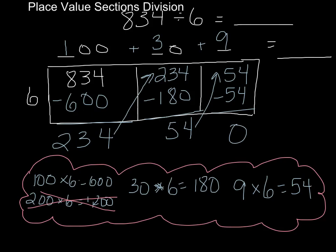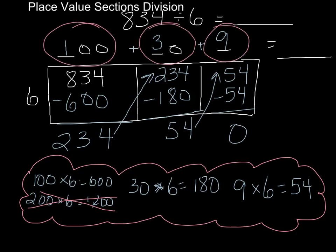So what I have up here would be called partial dividends. 100 groups, and 30 groups, and 9 groups. Now I want my whole dividend together, so I'm just going to add those: 100 plus 30 plus 9 is going to get me 139. So there are 139 groups of six in 834. That is the basics for place value sections division.